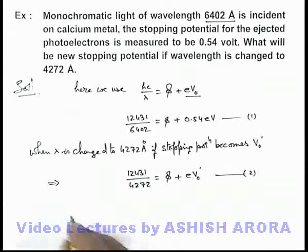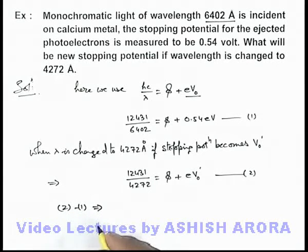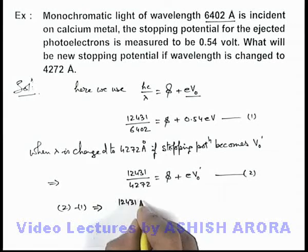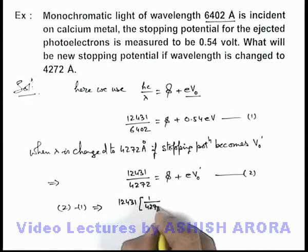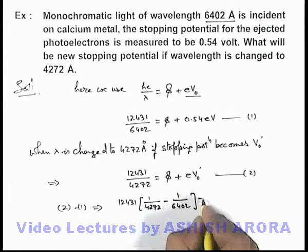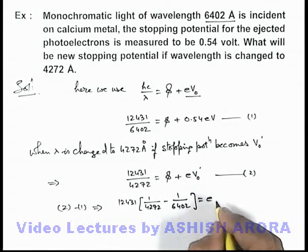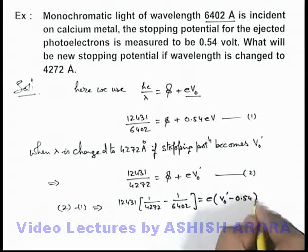Here we subtract the 2 equations, this is 2 minus 1, which will result 12431 multiplied by 1 by 4272 minus 1 by 6402 is equal to e multiplied by V₀ prime minus 0.54.